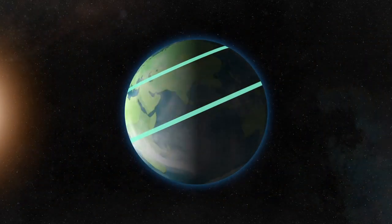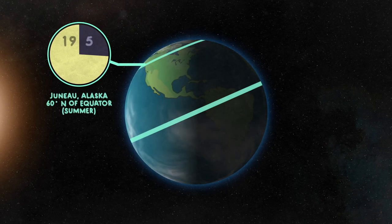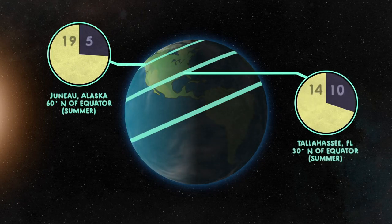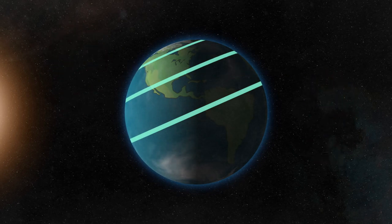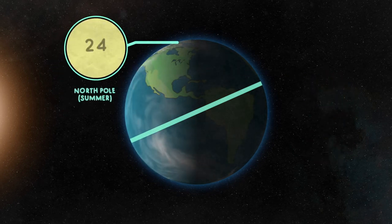The interesting thing is, as you move north, the number of daylight hours in summer increases. So Juneau, Alaska would get about 19 hours of daylight on the same summer day that Tallahassee, Florida gets about 14. In fact, in the summertime at the North Pole, the Sun never sets.